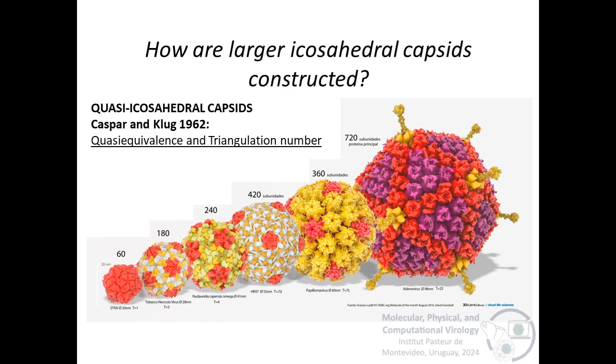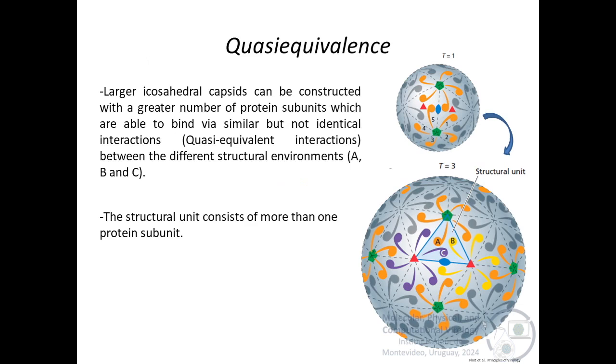But how are larger icosahedral capsids constructed? To make larger capsids, additional subunits must be included. In fact, the capsids of most animal viruses are made up of many more than 60 subunits and can accommodate quite large genomes. Caspar and Klug have developed a theoretical model based on two important concepts, the quasi-equivalence and the triangulation number. When the capsid is made up of more than 60 subunits, the interactions between them are similar or quasi-equivalent but not identical, and each subunit can be in one of several different structural environments designated A, B, or C.